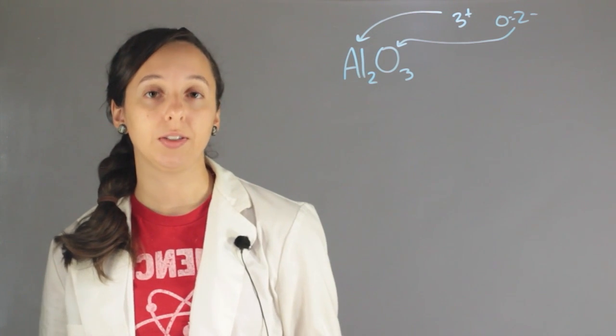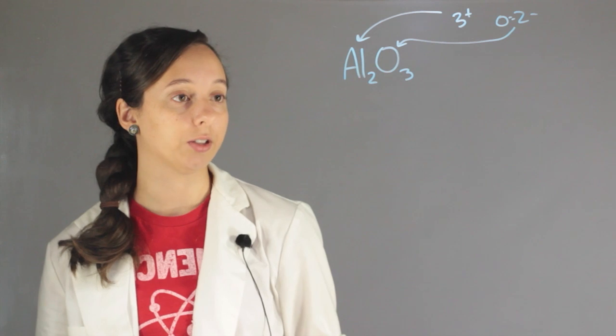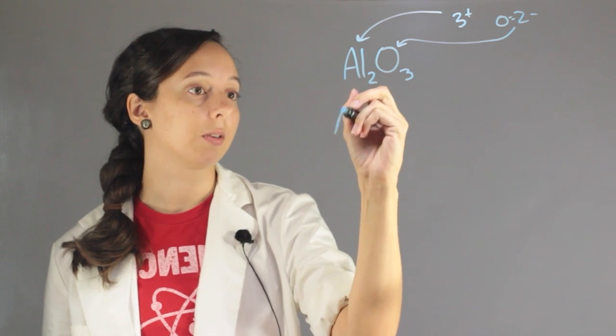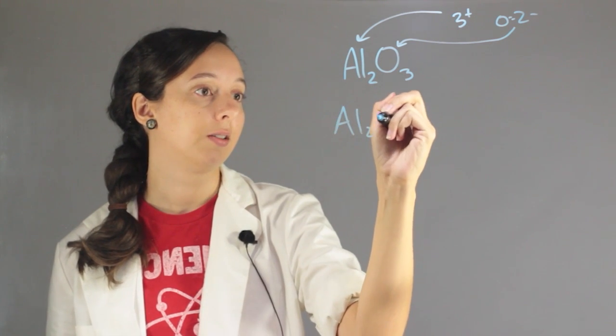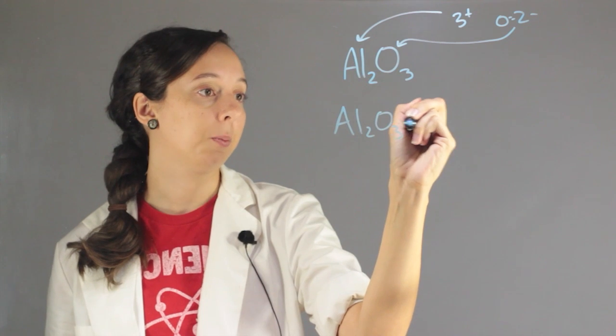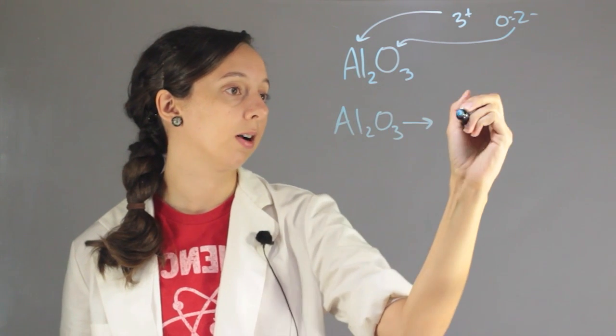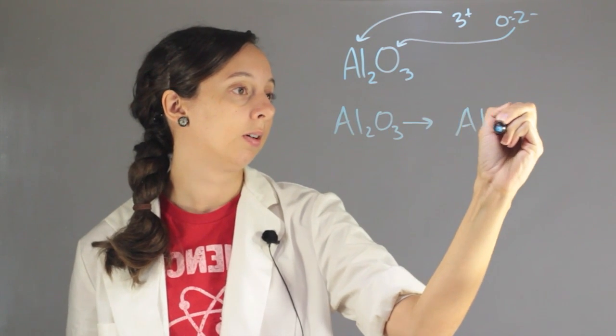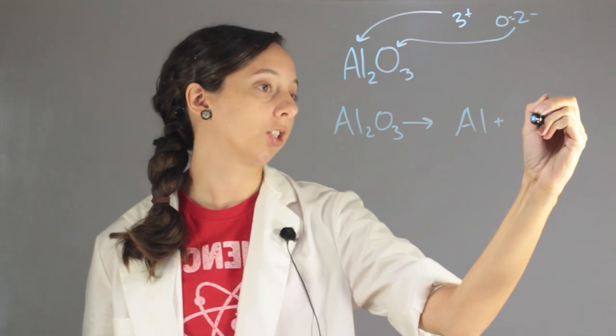So now we're putting this substance under electrolysis. So that means that we're going to take our aluminum oxide and break it down until it falls apart into aluminum plus oxygen gas.